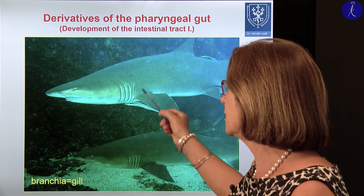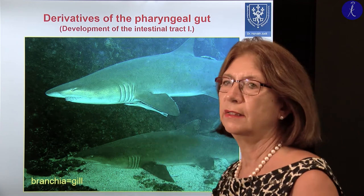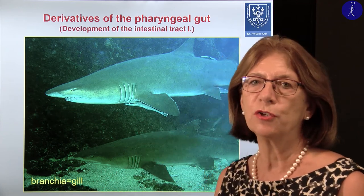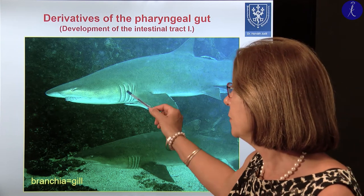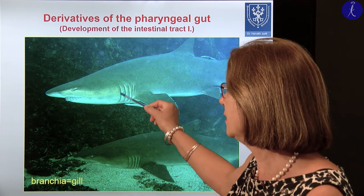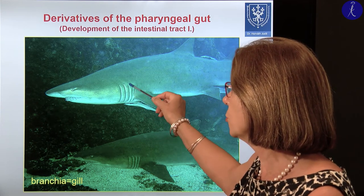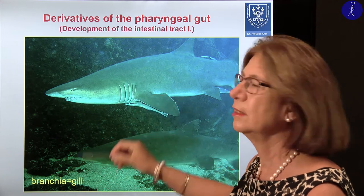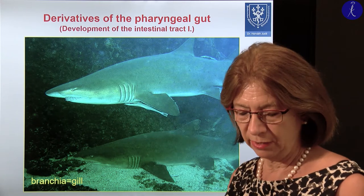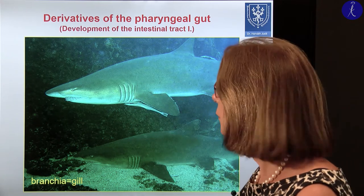This territory is the territory in fish which will give the gills. With the shark it's interesting because these arches are well visible — it doesn't have a gill lid, so it's not covered like with the other fish.